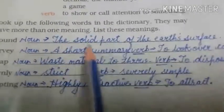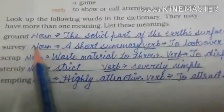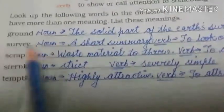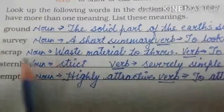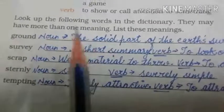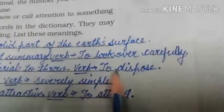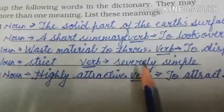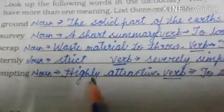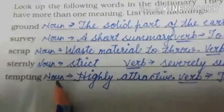Ground as a noun: the solid part of the earth's surface. Survey as a noun: a short summary; as a verb: to look over carefully — like the Maharaja went into the kitchen to survey the dishes. Scrap as a noun: waste material; as a verb: to dispose. Sternly as a noun means strict; as a verb: severely. Tempting as a noun: highly attractive; as a verb: to attract. I have already done this for you — you have to do it in your book, not in your notebook.